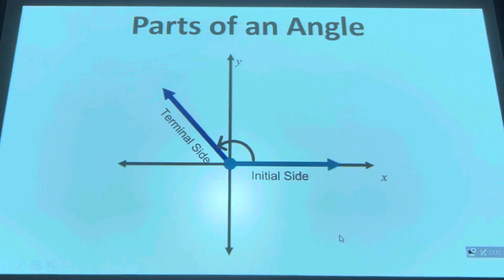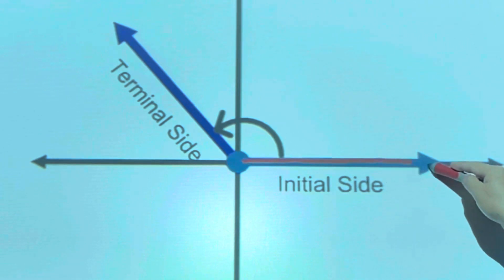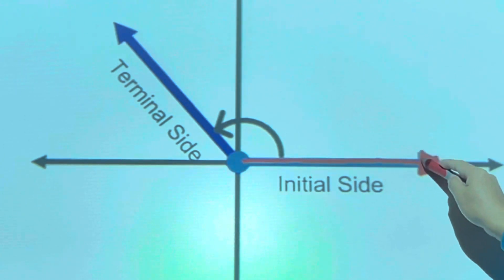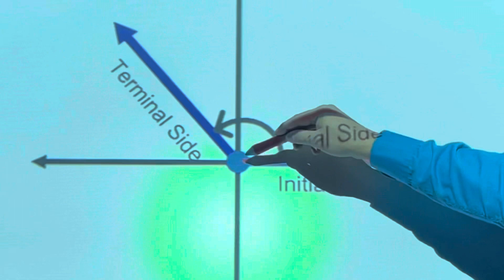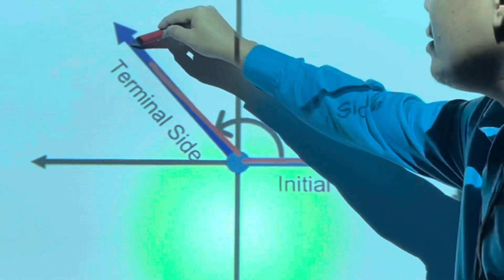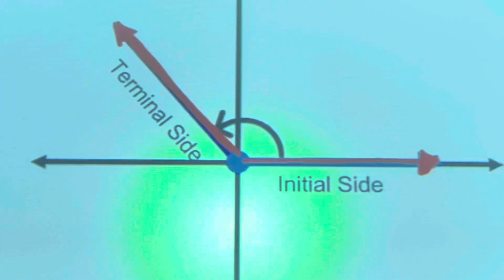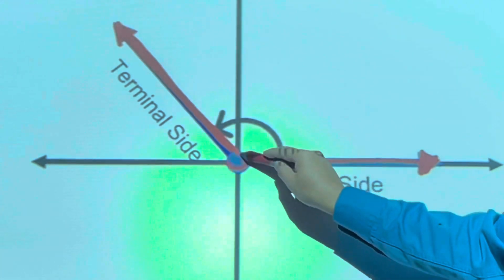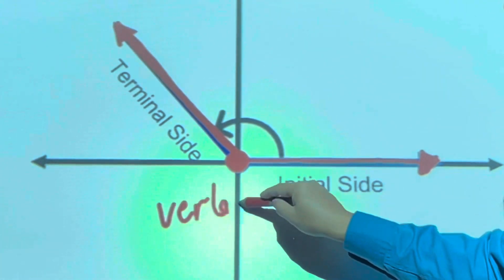Now let's take a look at the different parts of the angle. In an angle, there is the so-called initial side — this is where the angle starts. And then another part of the angle is the so-called terminal side — this is the ray where your angle stops. There's also the vertex; this is the vertex of the angle.